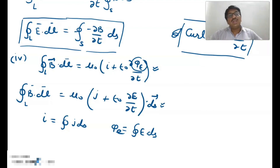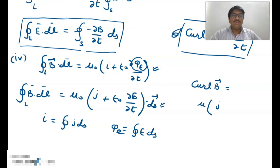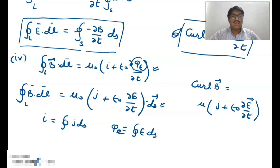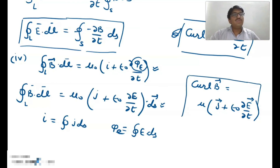And if we write it in differential form, then we can write: curl of magnetic field is equal to mu naught J plus epsilon naught del E over del T, where J is current density — a vector quantity. This is the differential form of Maxwell's fourth equation.